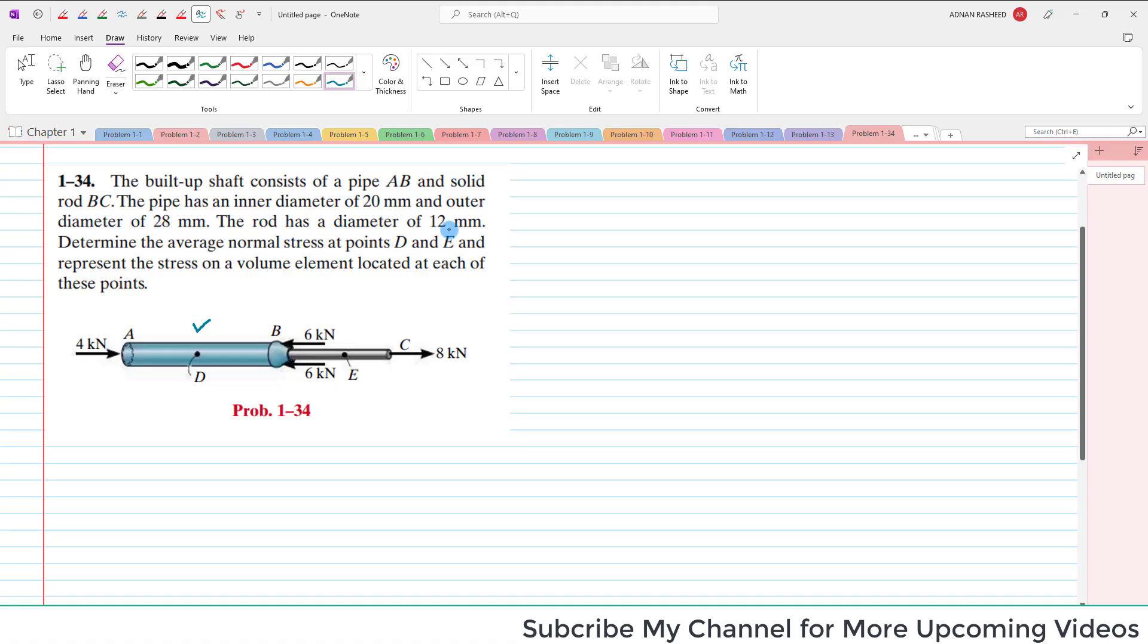The pipe has inner diameter of 20 millimeters and outer diameter of 28 millimeters, while the rod has a diameter of 12 millimeters. Determine the average normal stress at points D and E. Represent the stress on a volume element located at each of these points. So you have to find the stress sigma D and you have to find the stress at sigma E.